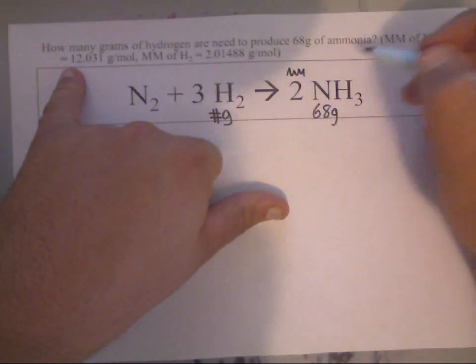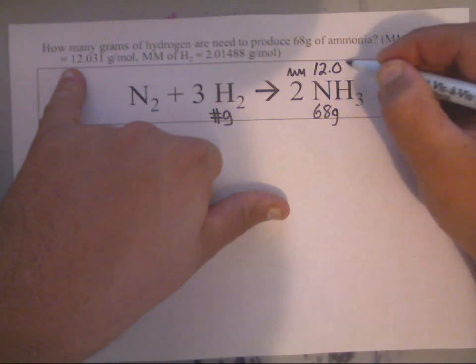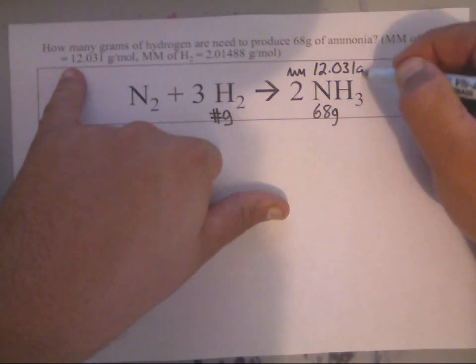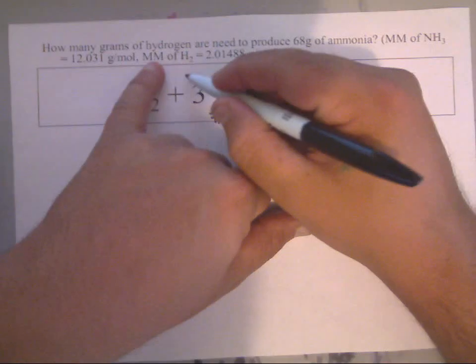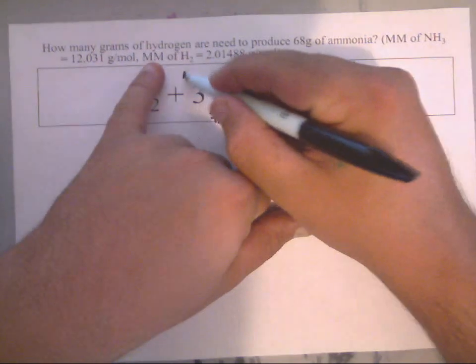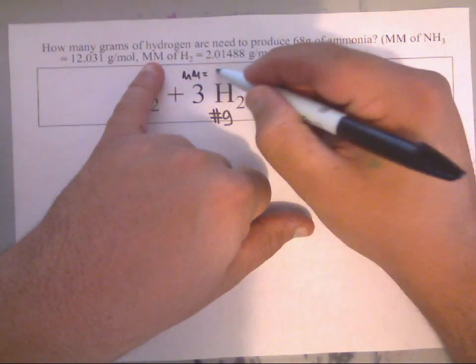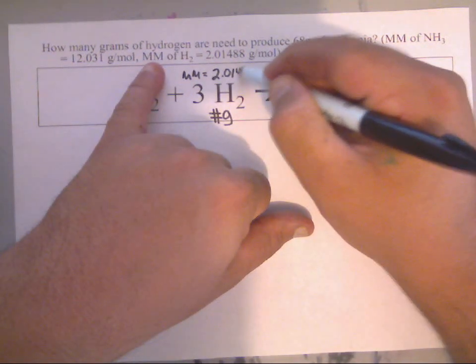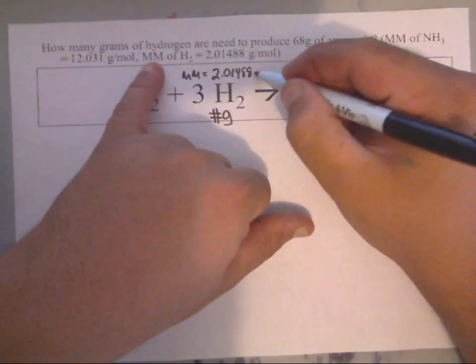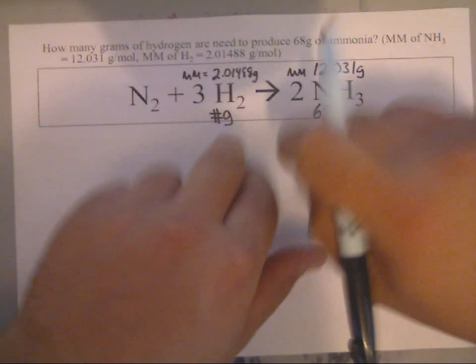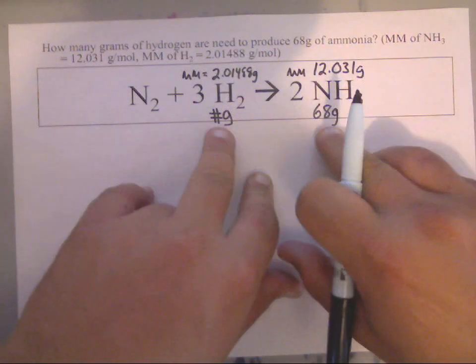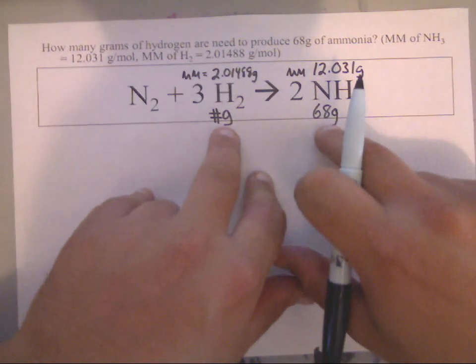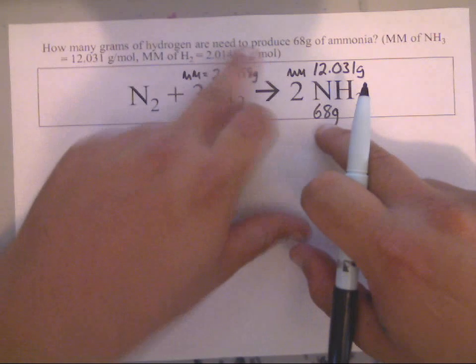They were nice enough to give that to me, so my molar mass of my NH3 is 12.031 grams, and they tell me the molar mass of my H2, which they were nice enough to give me, is also 2.01488 grams. So I've got every piece of information that I would ever need to work this problem labeled on my balanced equation. That helps because it saves time because I'm not going to go back up here and reread all this.